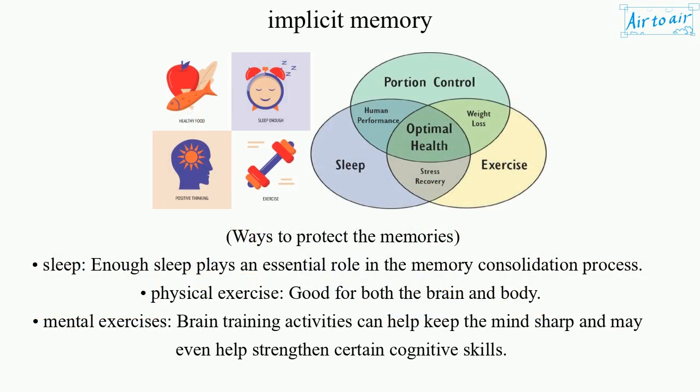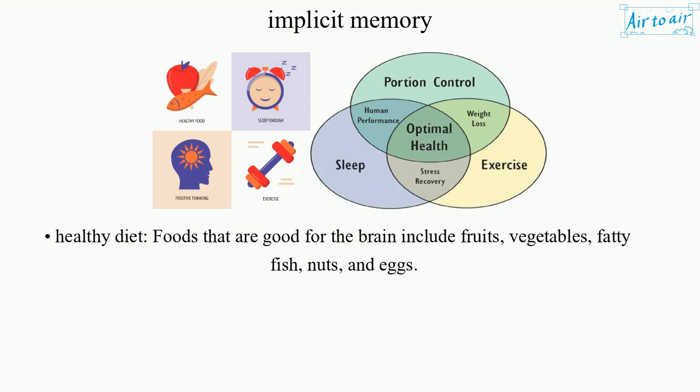Ways to protect the memories. Sleep: enough sleep plays an essential role in the memory consolidation process. Physical exercise is good for both the brain and body. Mental exercises: brain training activities can help keep the mind sharp and may even help strengthen certain cognitive skills. Healthy diet: foods that are good for the brain include fruits, vegetables, fatty fish, nuts, and eggs.